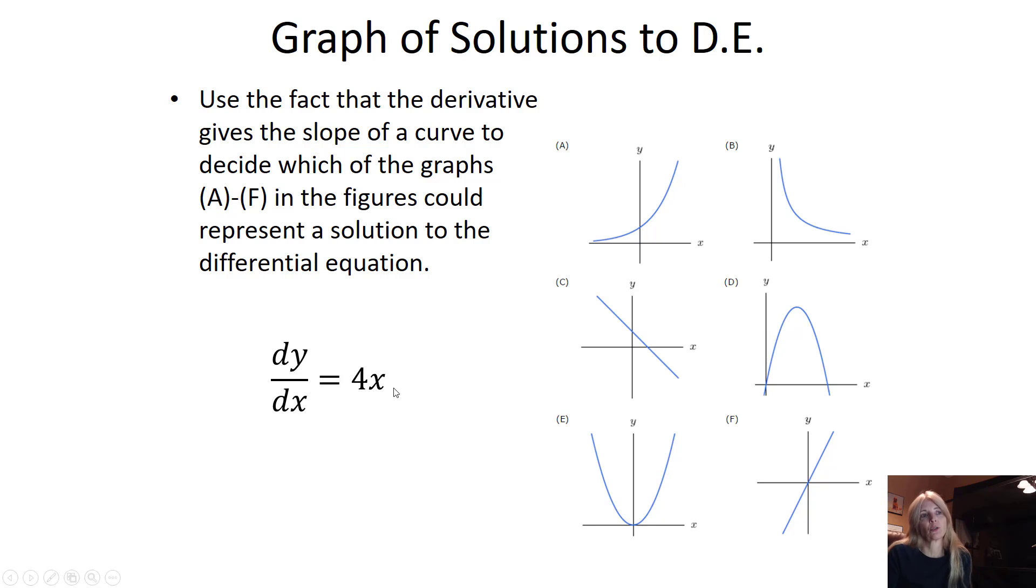4x. Once again, if these are slopes, you can either say, well, I'm plugging in 1, the slope is 4, 2, the slope is 8, 0, the slope is 0. Or, since this is in terms of my variable, I could simply take the antiderivative, which would be 4x squared over 2, right? And so it has to be that one.